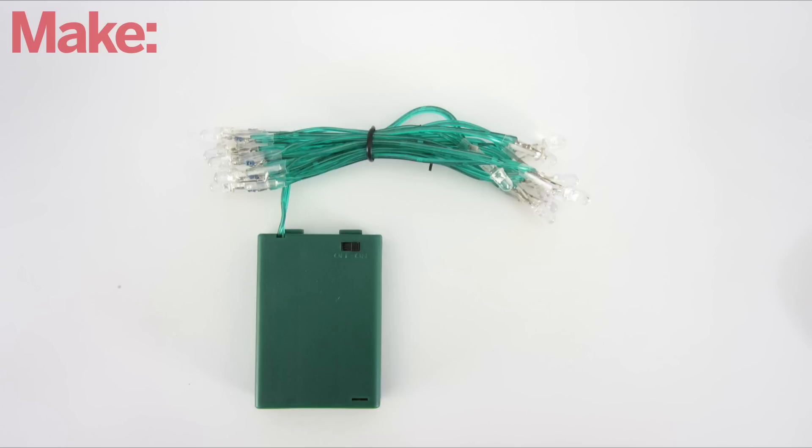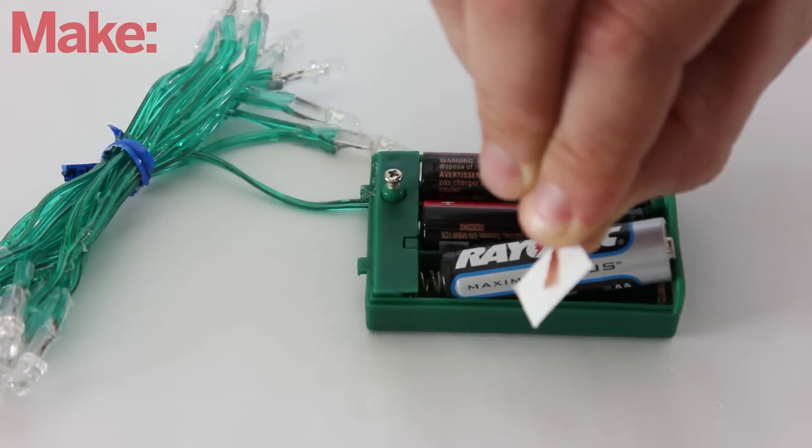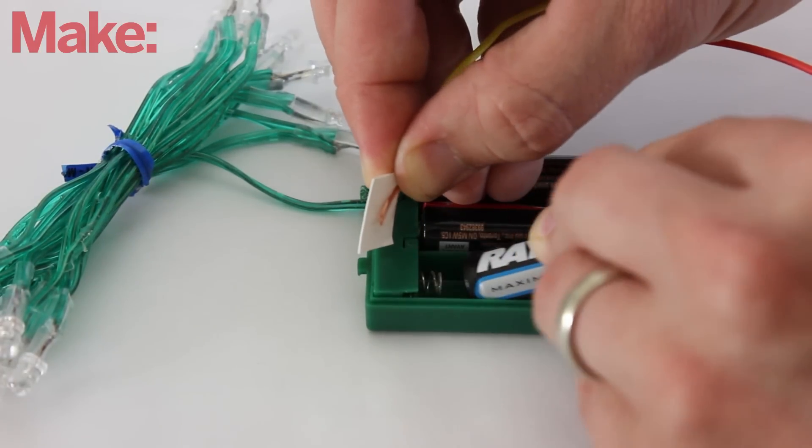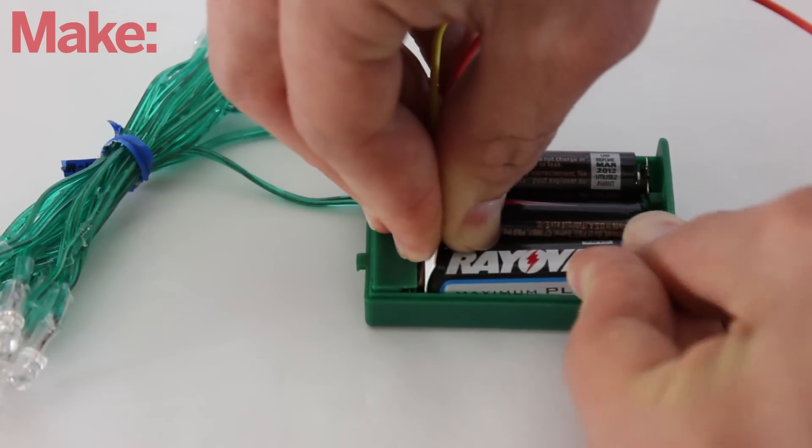The simplest way to set up the lighting LEDs is to use a string of battery-powered lights. To be able to control them with a transistor, take two wires and put a piece of card stock between them. Then insert this between the spring and the negative most terminal of the battery pack.